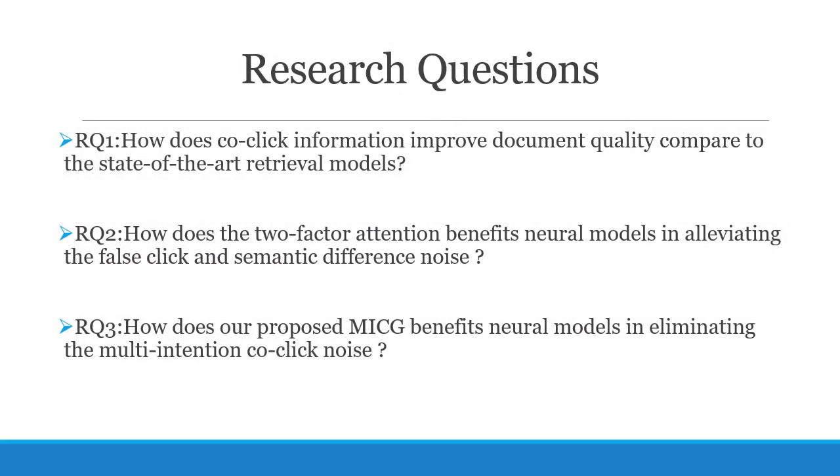Specifically, to explain our insights in detail, we break down this principal research question into three individual ones to guide our experimental study. Question 1: How does co-click information improve document quality compared to the state-of-the-art retrieval models? Question 2: How does the two-factor attention benefit neural models in alleviating the false click and semantic difference noise? Question 3: How does our proposed MICG benefit neural models in eliminating the multi-intention co-click noise?